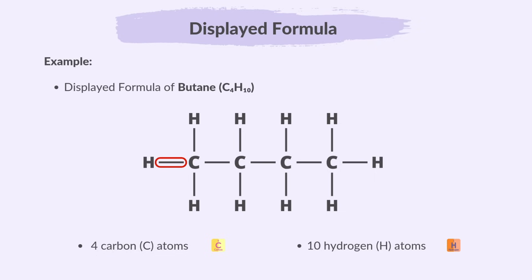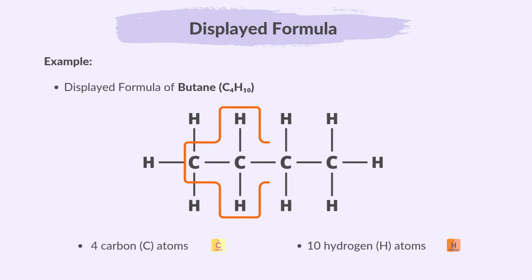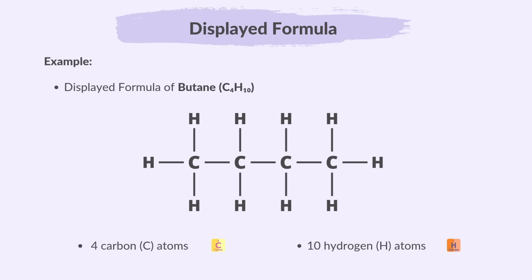Each line between atoms represents a single covalent bond. Carbon atoms are arranged in a straight chain, with each carbon forming single bonds to 4 other atoms — usually hydrogen — because carbon needs 4 bonds to be stable. Carbon has a valency of 4. The end carbon atoms are each bonded to 1 carbon atom and 3 hydrogen atoms, while the middle carbon atoms are each bonded to 2 carbon atoms and 2 hydrogen atoms. The displayed formula gives a clear picture of how the atoms are arranged and connected, showing every atom and bond explicitly.